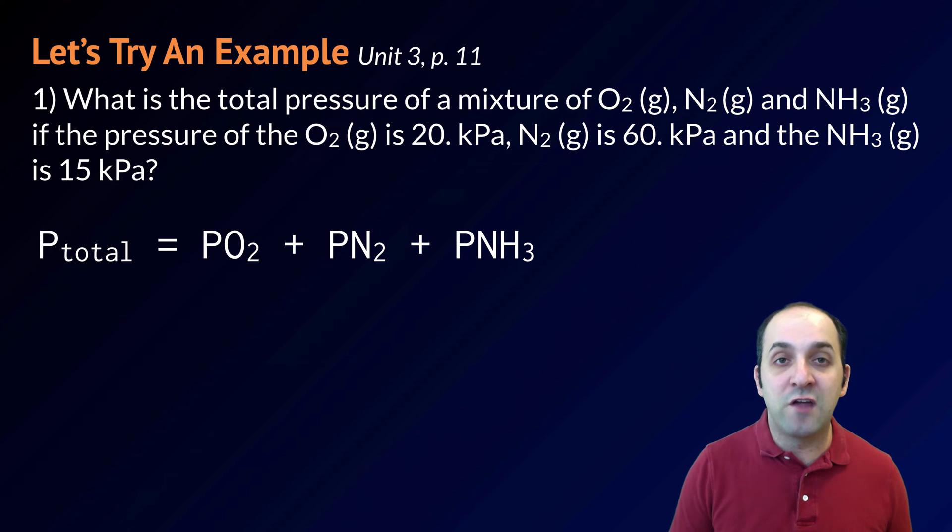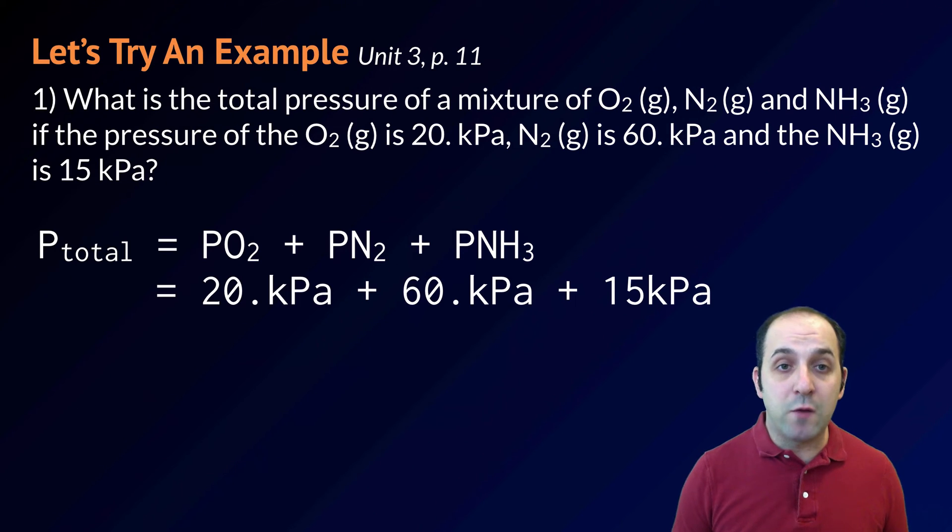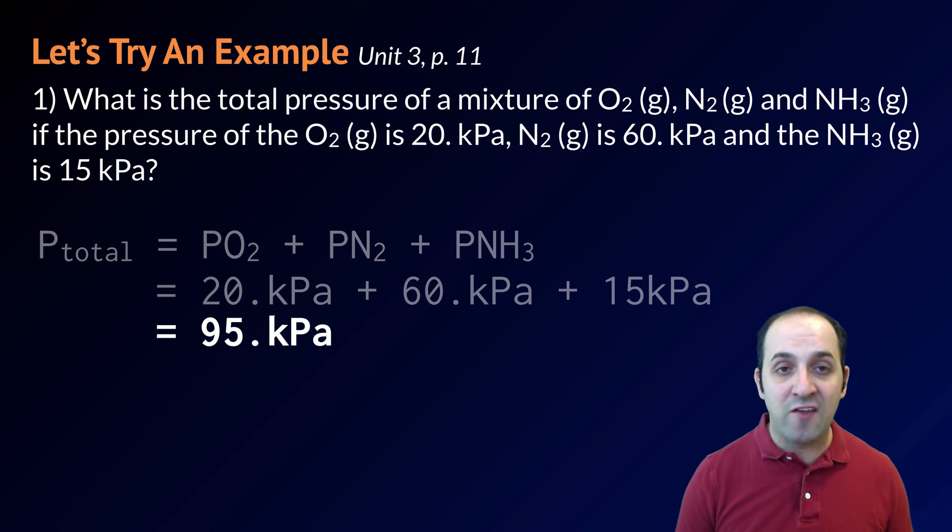So Dalton's law of partial pressures tells us that the total pressure is going to be equal to the sum of each of the individual pressures. Using that, we can solve this problem very easily. The total pressure is going to be equal to 20 kilopascals, the pressure of the oxygen, plus 60 kilopascals, the pressure of the nitrogen, plus 15 kilopascals, the pressure of the ammonia. We just add those up and we'll get a final answer of 95 kilopascals for our total pressure.